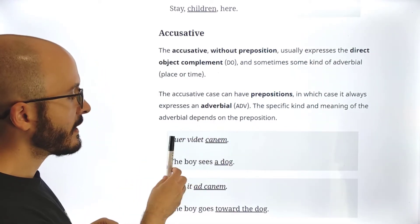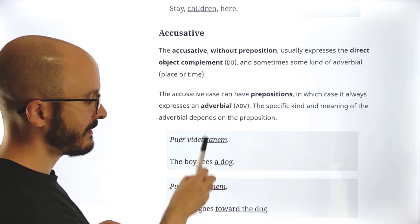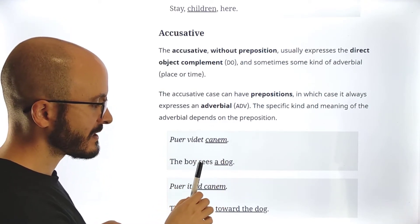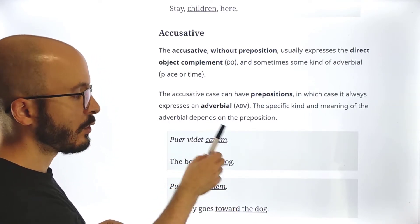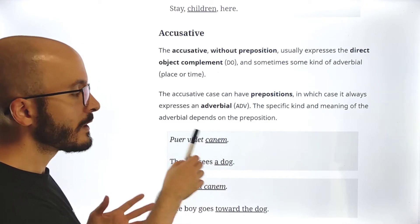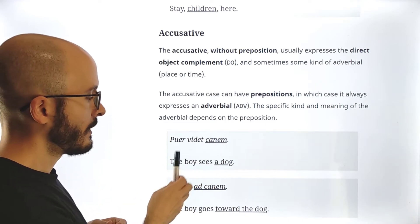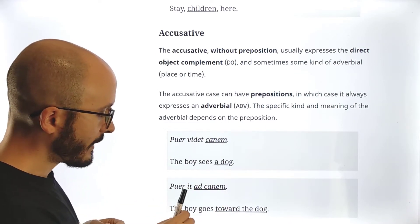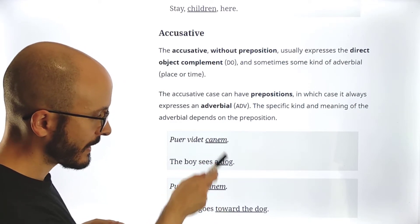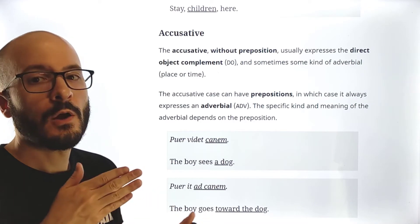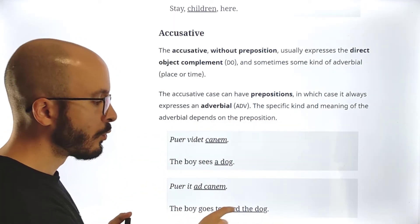So let's see some examples. Here we have puer videt canem. And here we have an accusative. And this means the boy sees a dog. So here we have accusative without preposition. And we know that this verb needs an object. So here we have it. The boy sees a dog. And then, puer it ad canem.